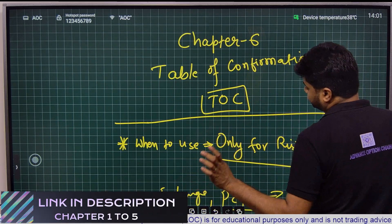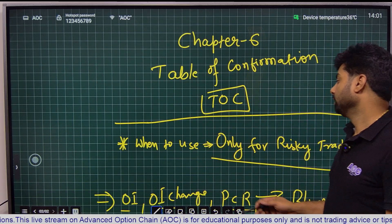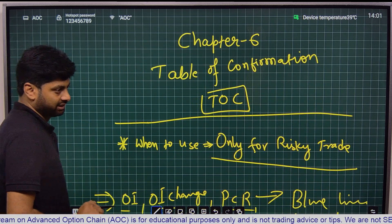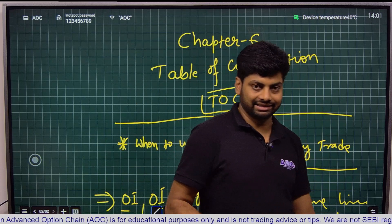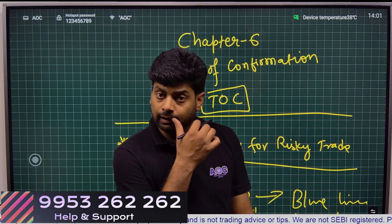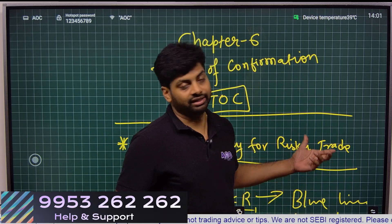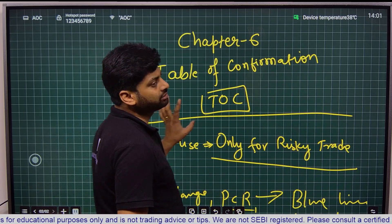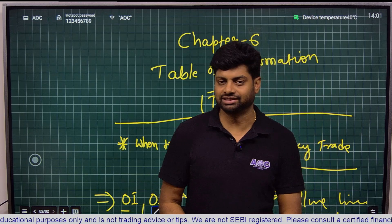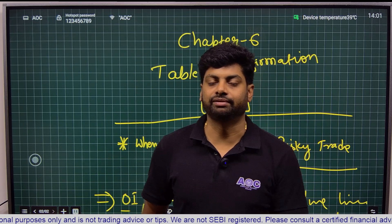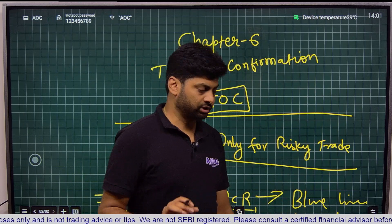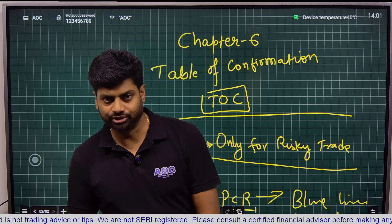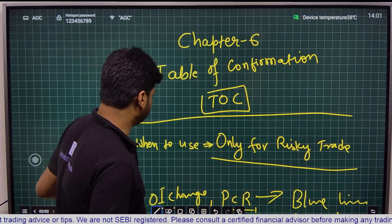The first and foremost thing we need to remember is that we use TOC only for risky trades. We do not initiate a trade based on this, but we look at it whenever we feel our trade is going against us or it's a risky trade. That is why it is called table of confirmation — it is only a confirmation tool to reduce your risk exposure, not a trading tool. You are not supposed to take a trade solely on the basis of TOC.